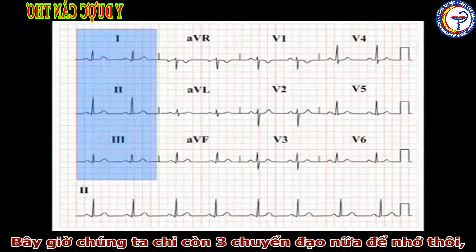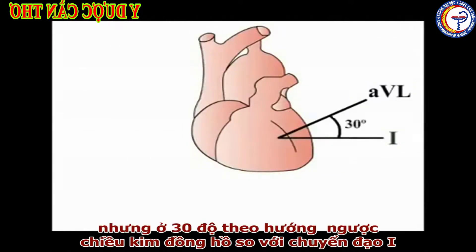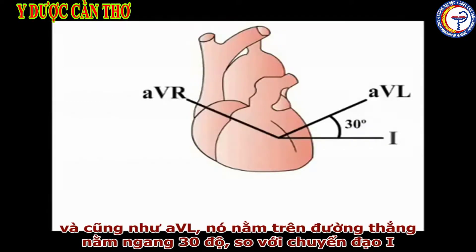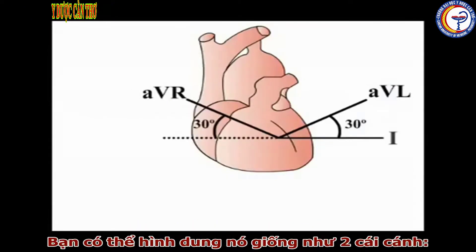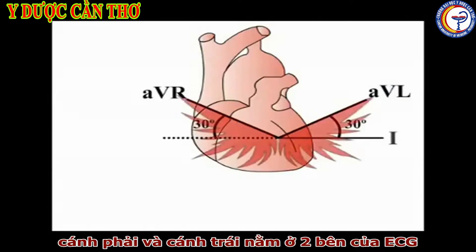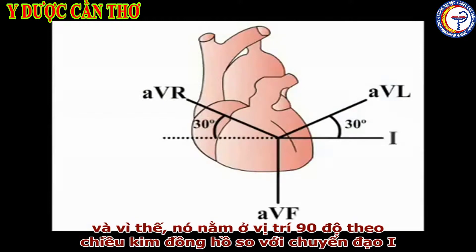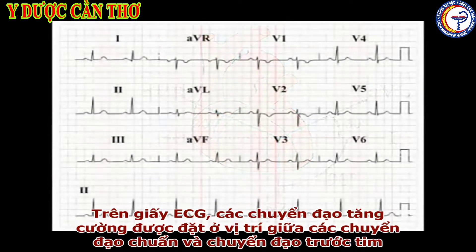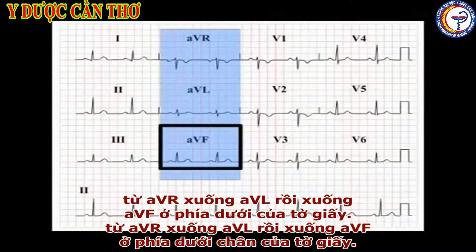We are now left with three further vertical leads: the augmented leads, AVR, AVL, and AVF. AVL looks at the heart from the left — L is for left — but at 30 degrees anti-clockwise, or more to the left, from lead 1. AVR looks at the right side of the heart — R is for right — and just like AVL, it is 30 degrees above the horizontal relative to lead 1. As AVL and AVR are set at 30 degrees off the horizontal plane, you can think of them as the left and right wings of the ECG. AVF looks straight up at the inferior surface of the heart, at 90 degrees clockwise from lead 1 — think of AVF as looking straight up at the heart from the feet; F is for feet. On the ECG readout, recordings from the augmented leads are positioned between the standard leads and the chest leads, from AVR to AVL, and down to AVF at the foot of the page.